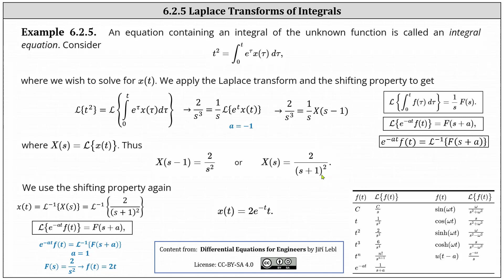This indicates X(s) equals two divided by (s + 1)². To get X(s) from X(s − 1) we replace s with (s + 1). From here, to determine x(t) we need to take the inverse Laplace transform of X(s), which equals the inverse Laplace transform of two divided by (s + 1)².